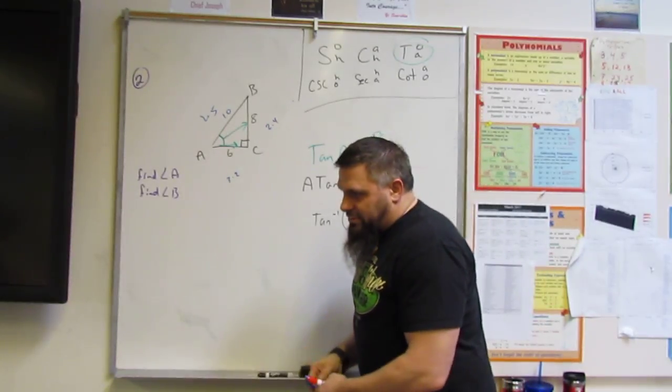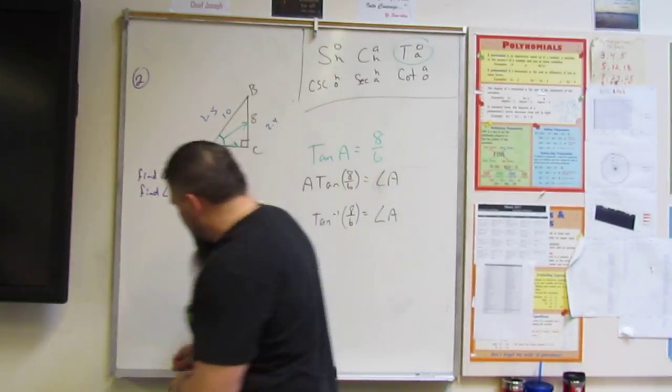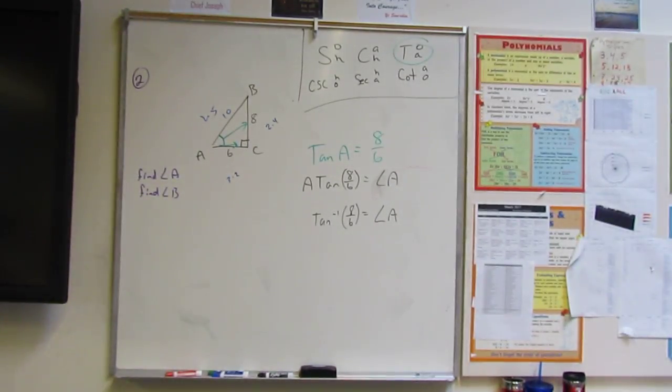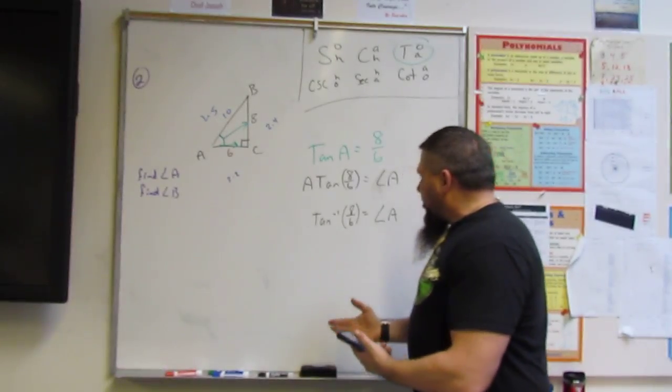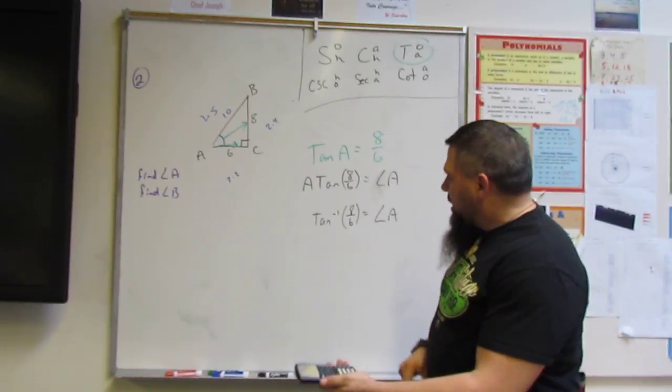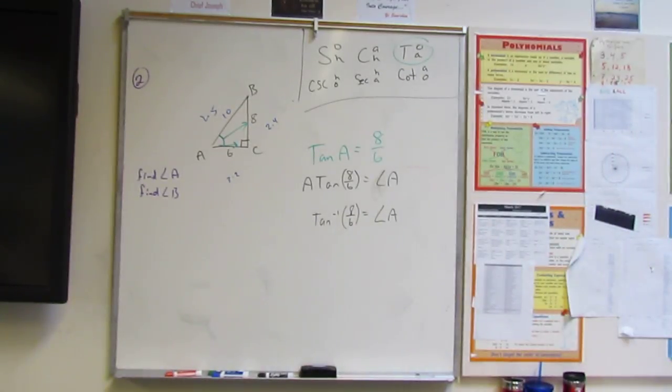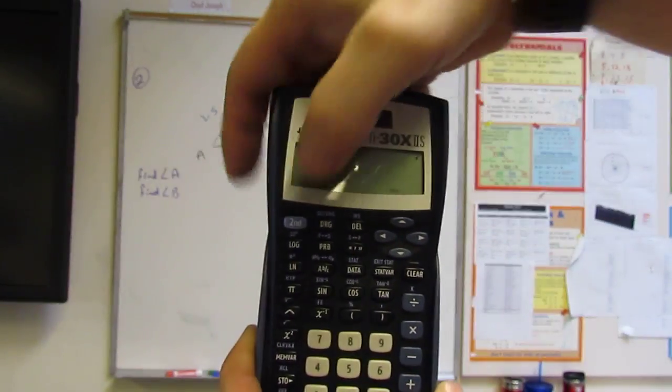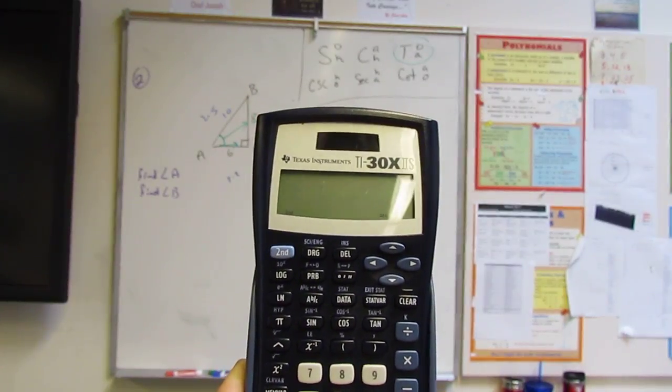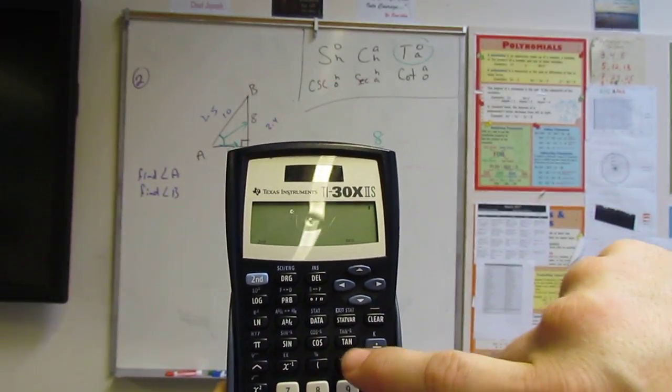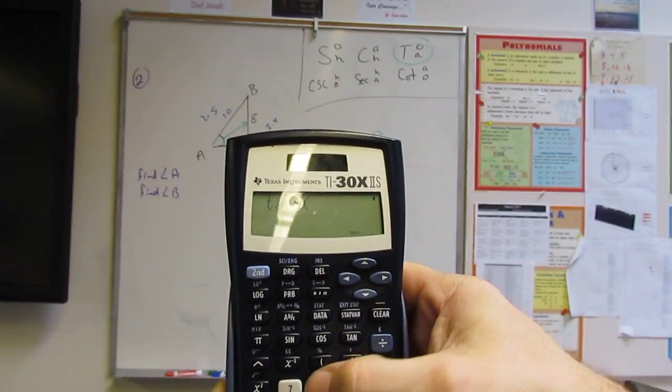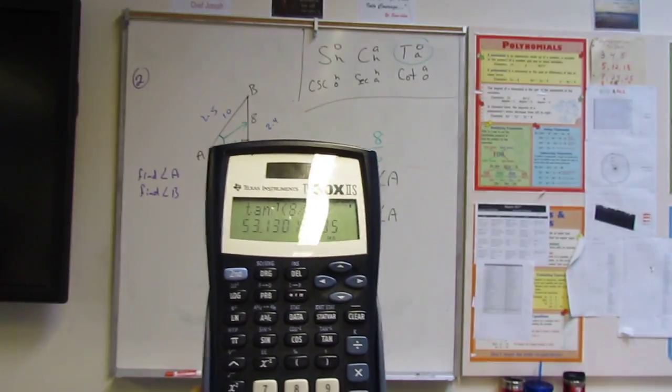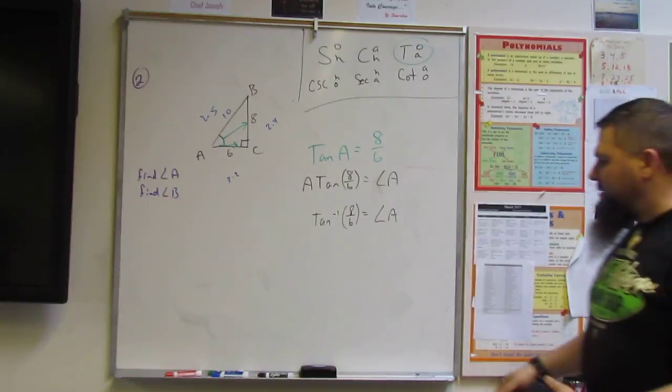So it all depends on what your calculator has on it. So with this calculator, it probably has the inverse, right? Yeah. So this is the one we'll be using, because that's what's on your calculator, right? And so all I have to do is punch in, so I'll show you. I punch in second, and then tangent. Tangent, where's tangent? Tangent, and it comes up tangent inverse of eight divided by six, and it equals, comes up with 53.13 degrees.